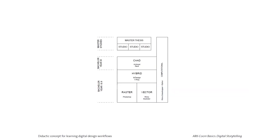How should you learn these things? In your bachelor's first or second year, you should quickly get familiar with vector workflows and raster workflows. There's another course I teach — Visual Storytelling elective, in spring — that covers Photoshop, which is a raster workflow. Going through both courses covers you quite well. Then there are hybrid workflows: creating a portfolio in InDesign, doing professional visualizations with V-Ray. In the third year, you should learn computer-aided architecture design software like Archicad.